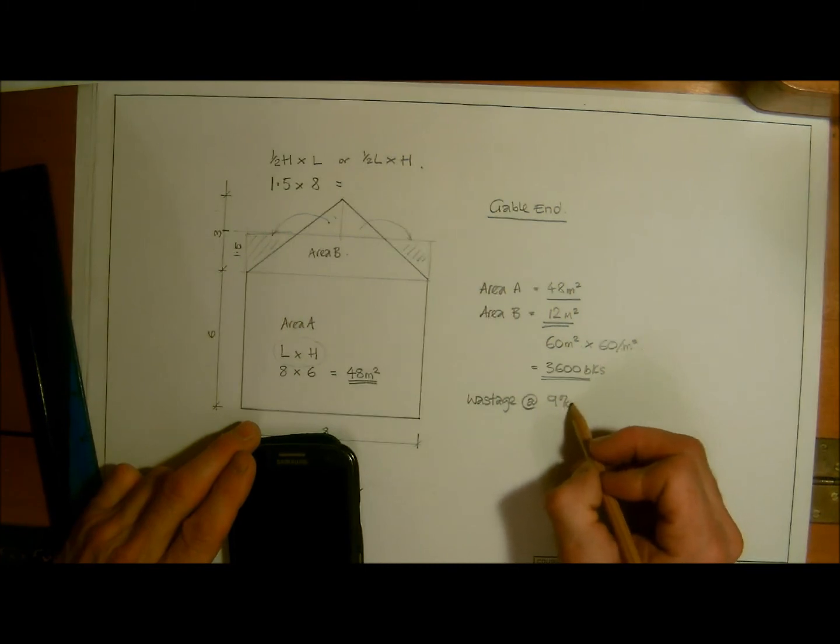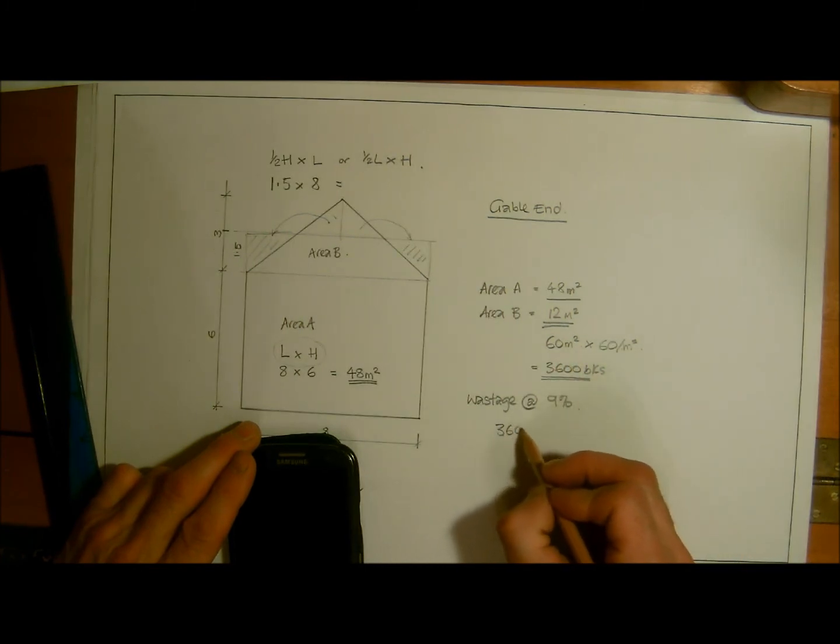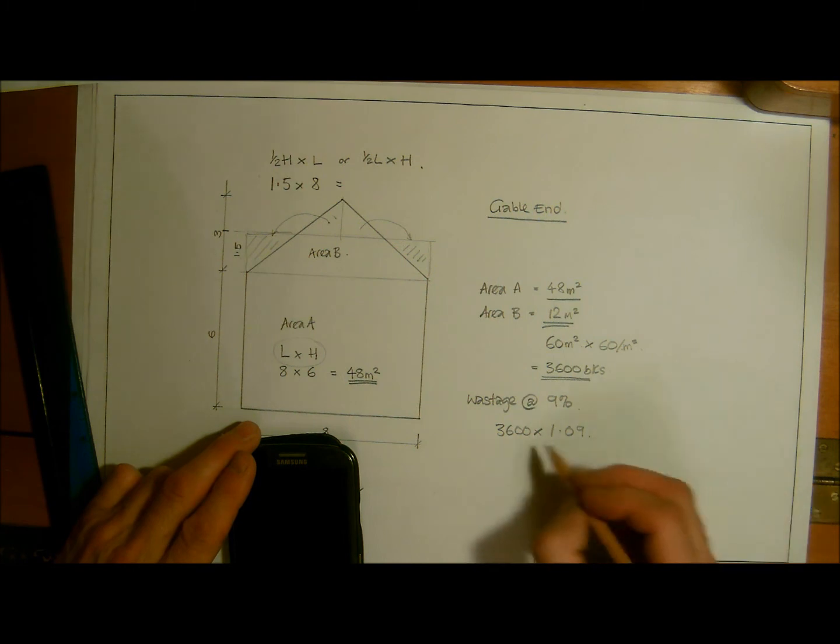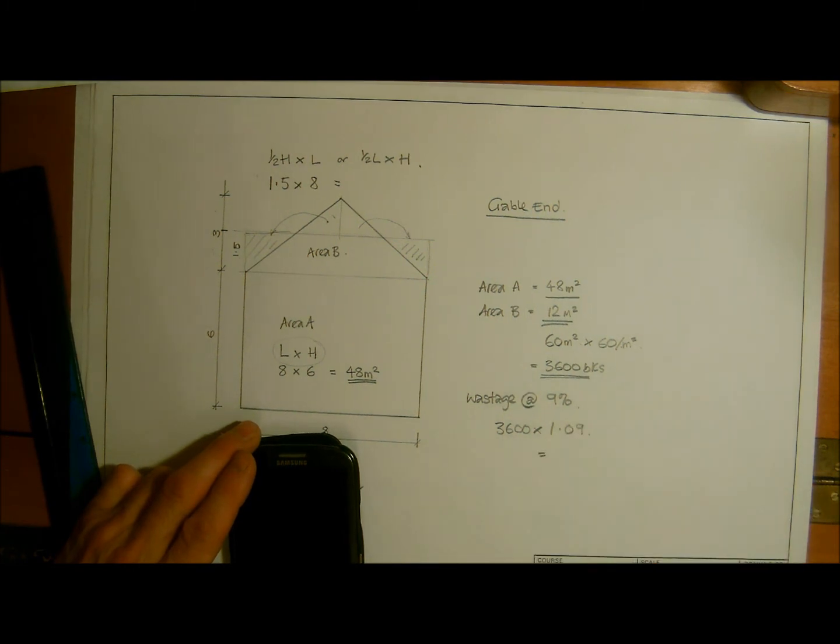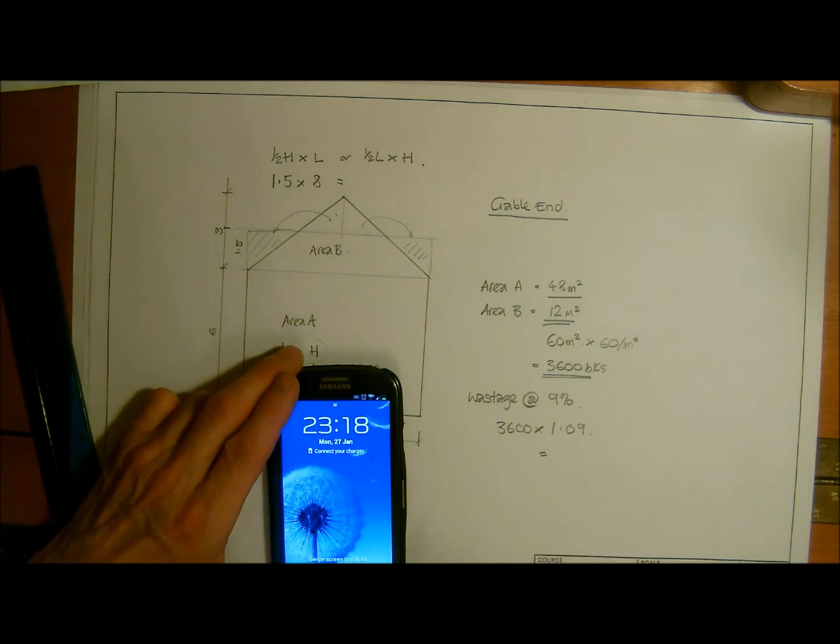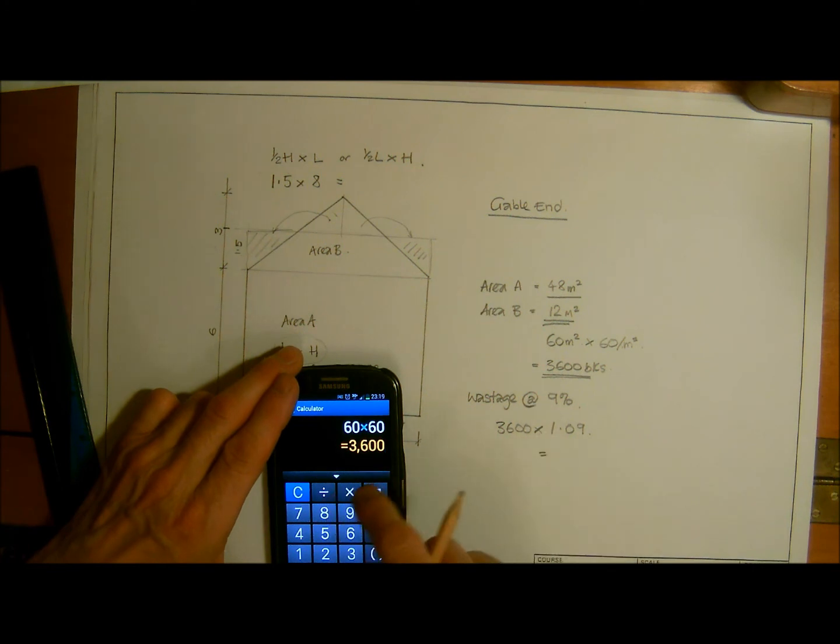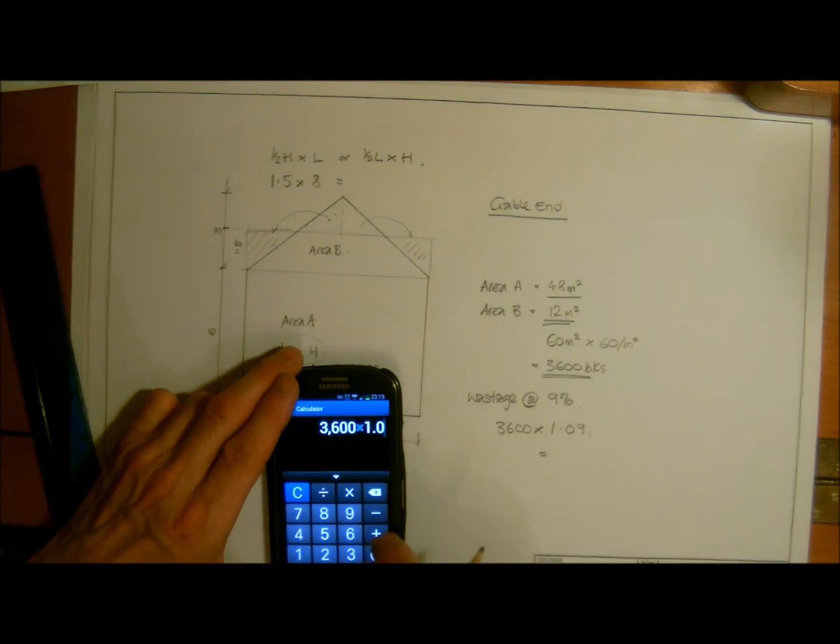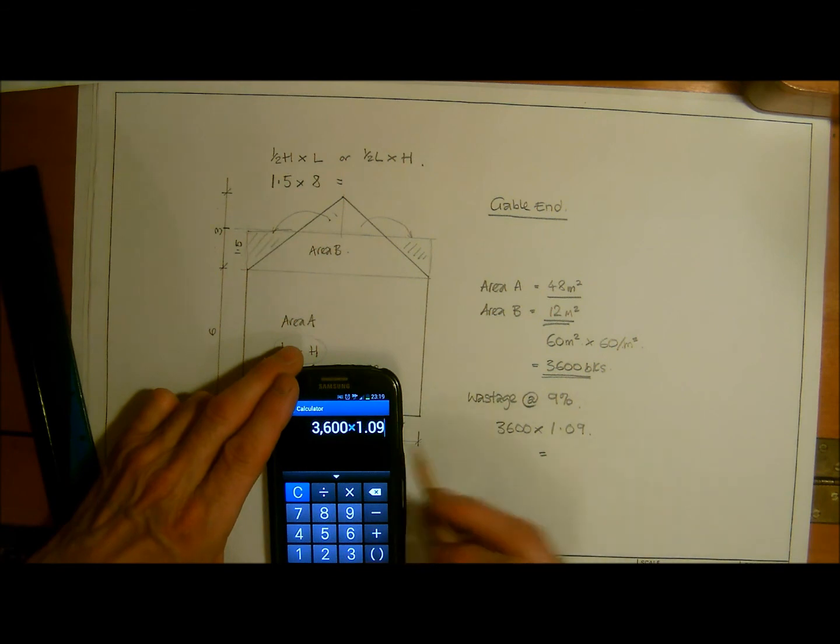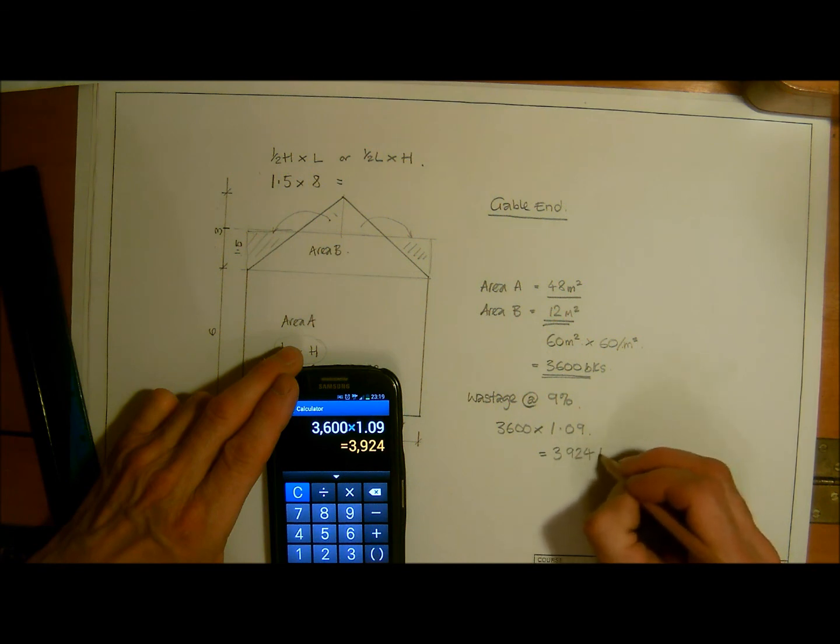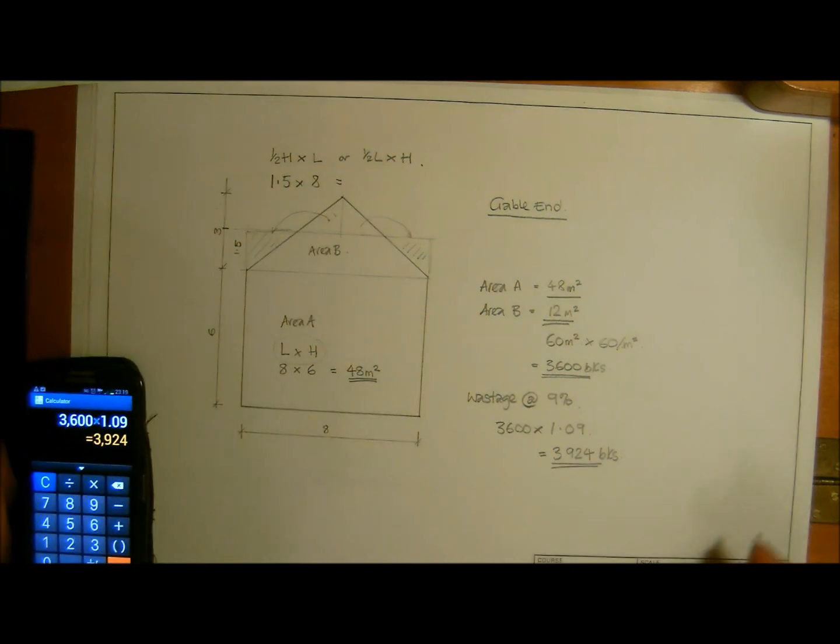Our total for all of this is going to be 3,600 multiplied by 1.09, because that's our percentage, equals 3,925 bricks for that gable end.